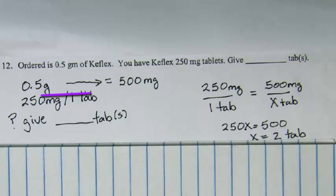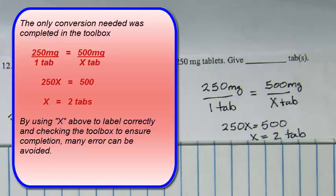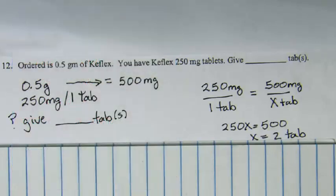Converting 0.5 grams: moving the decimal place three places to the right gives 500 milligrams. Our ratio and proportion shows a supply on the left side of 250 milligrams per one tablet, and an order on the right side for 500 milligrams solving for x tablets. 250x equals 500, x equals 2, and our label for x was tablets — which is what our question indicated we were looking for.